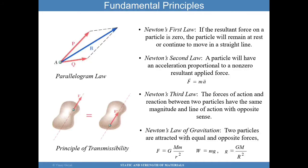And then we have the Newton's law of gravitation. Two particles are attracted with equal and opposite forces according to the formulas below. F is a force and you have G, the gravitational constant. M is the mass of the bigger mass. Small m is the mass of the smaller mass. And R is the distance between the masses. And weight here is W equals MG, mass times acceleration.